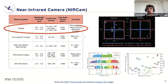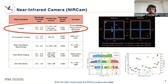When you observe with NIRCam imaging using both modules, you get 10 images. At the bottom there are plots showing the NIRCam filters and sensitivity. For all general information on the instrument and in particular imaging, there are links at the bottom of the page where you can find particular details, and also for the other modes if you're interested.